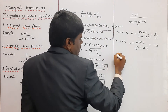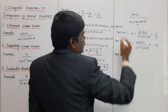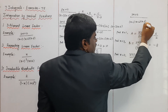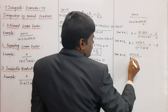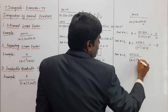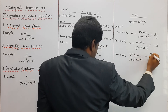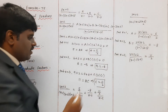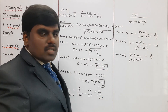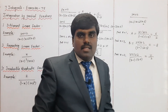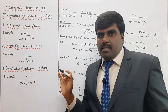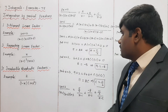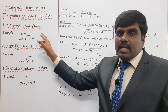The values of A, B, and C are the same using both methods. However, this shortcut method is applicable only for the different linear factor method. For repeating linear factor and irreducible quadratic factor, only the standard procedure can be used. This is a very important point.